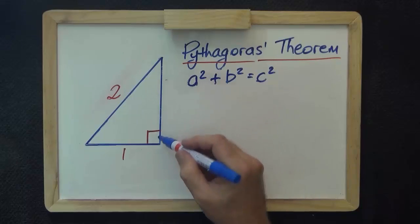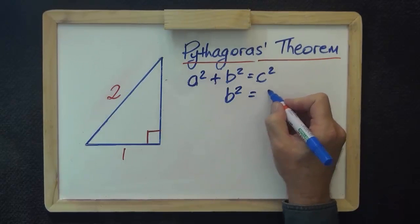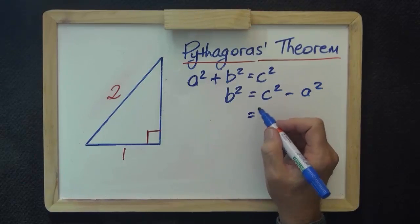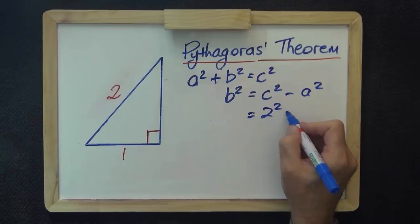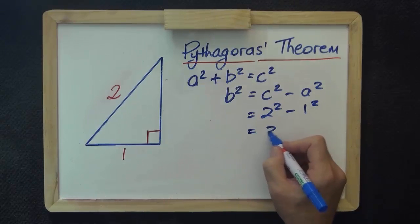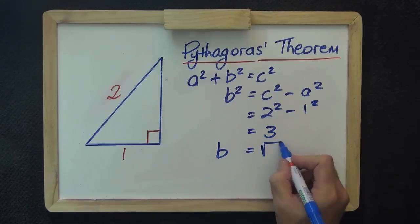Let's call that side b, but I can manipulate my formula to be c² - a². Now, c squared will be 2 squared, and a is 1 squared, so that's 3. So b equals root 3.